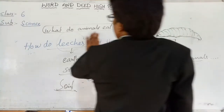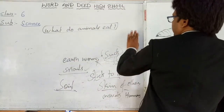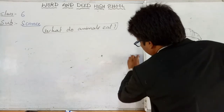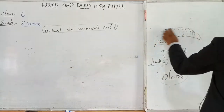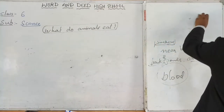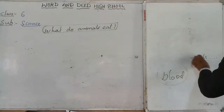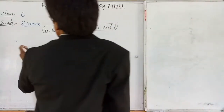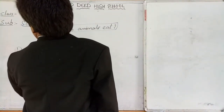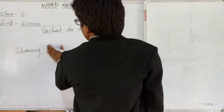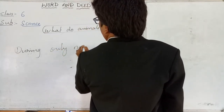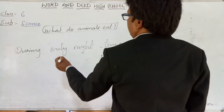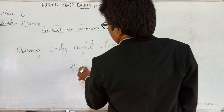Now let us talk about the mode of getting food by different animals. Mode of getting food, in this context, means the time of getting food. Some living things get their food only during night time, while some living things get their food only during day time.